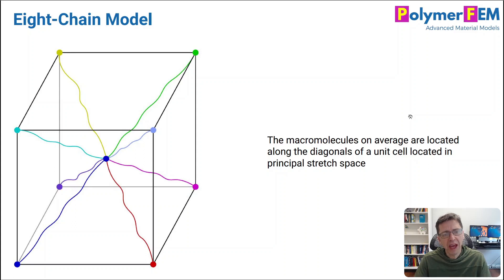That the molecules on average in the material are considered to be located along the diagonals of a unit cell. But this unit cell has to be oriented in principal stretch space. So in uniaxial loading and biaxial loading, the principal stretch space is the same as the applied stretch space. So that's easy to understand.